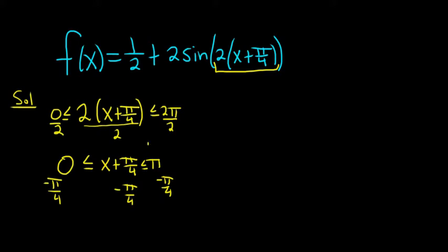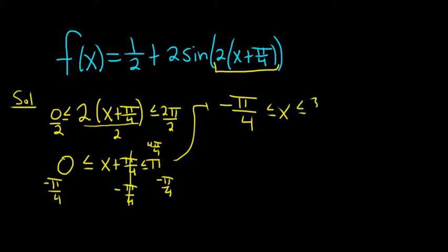The last step is to subtract π/4 from all sides. You can think of π as 4π/4. So you end up getting -π/4 ≤ x, because those cancel, and then 4π/4 minus π/4 is 3π/4. So step one is done.